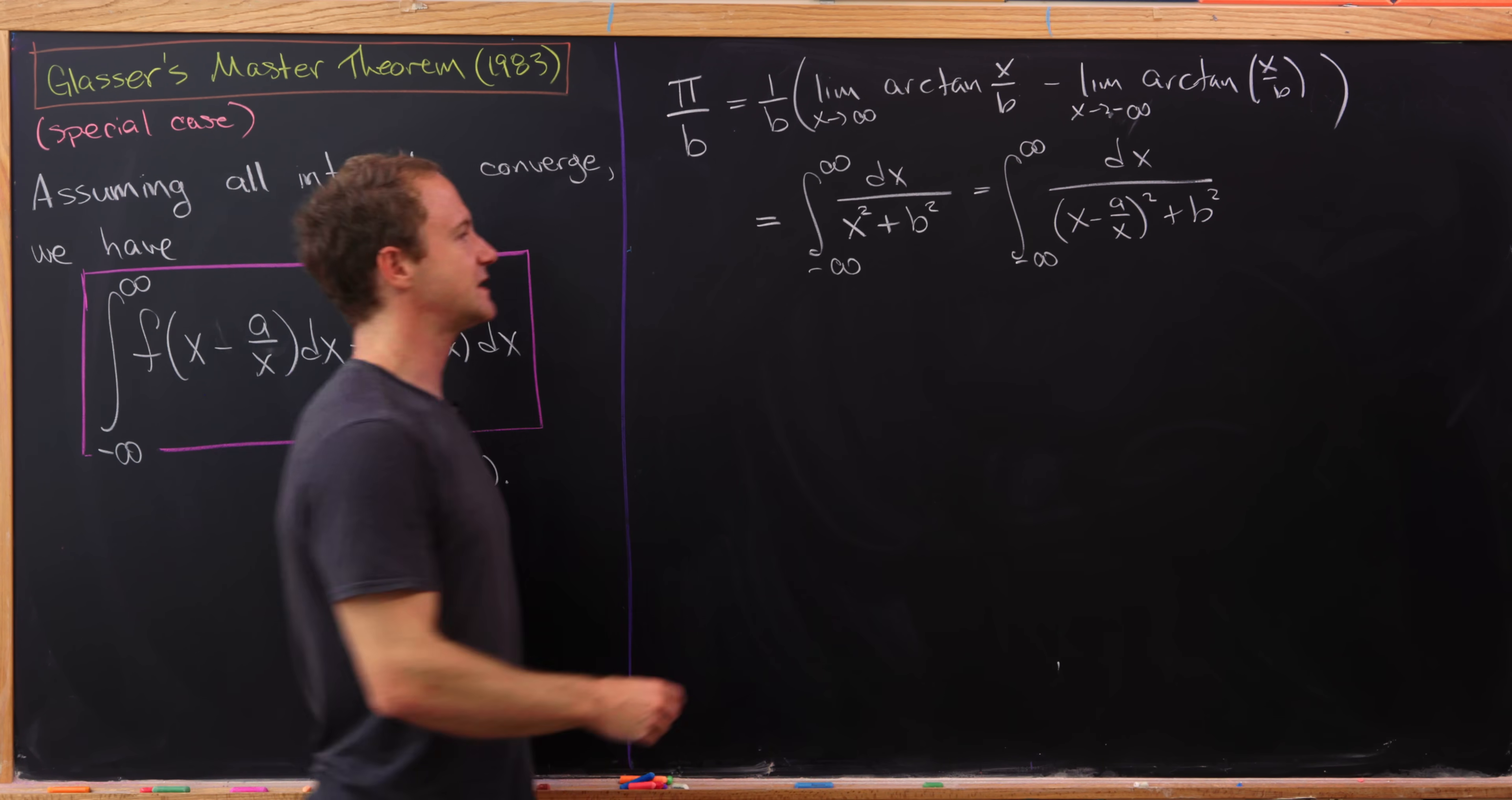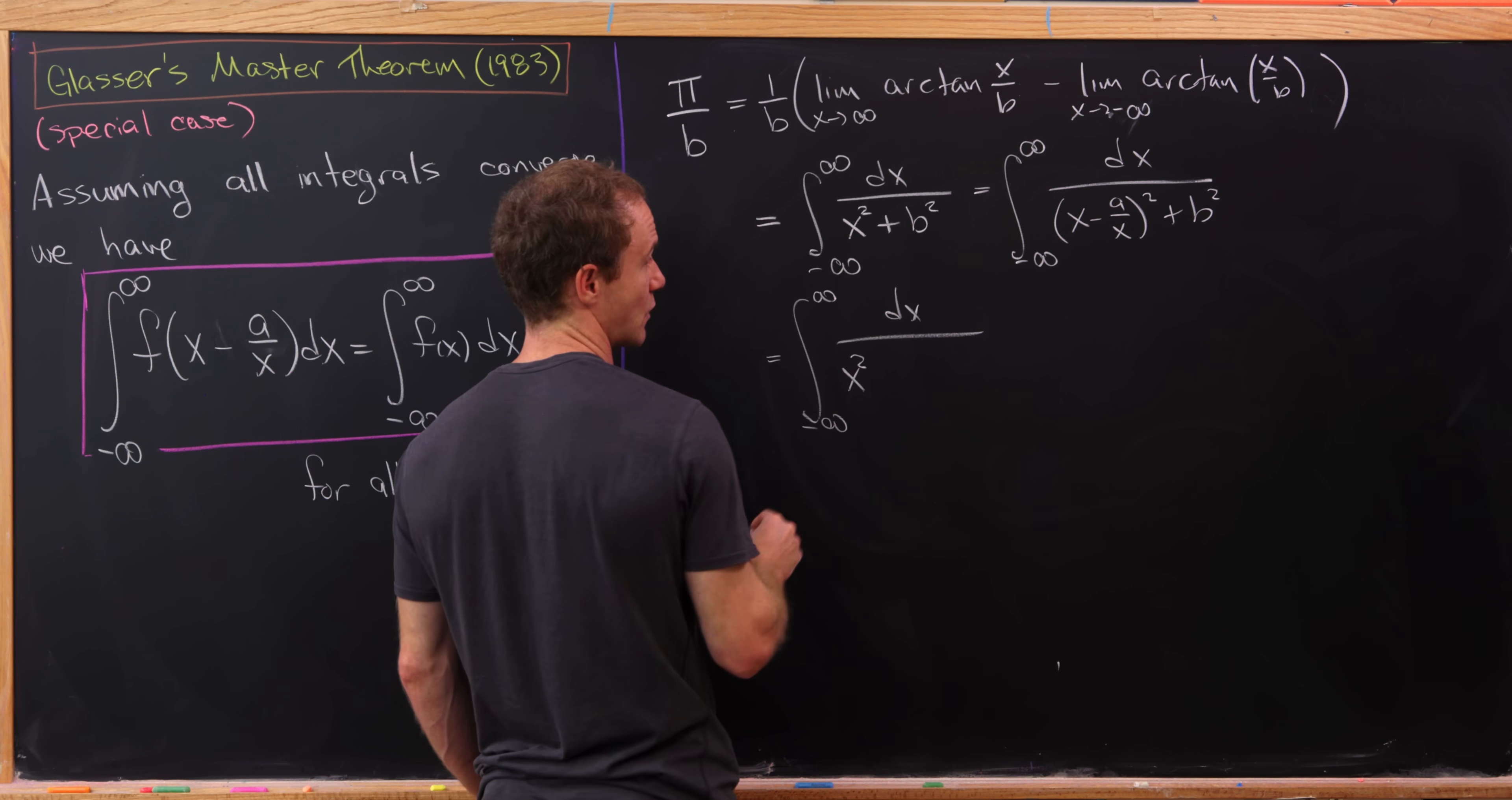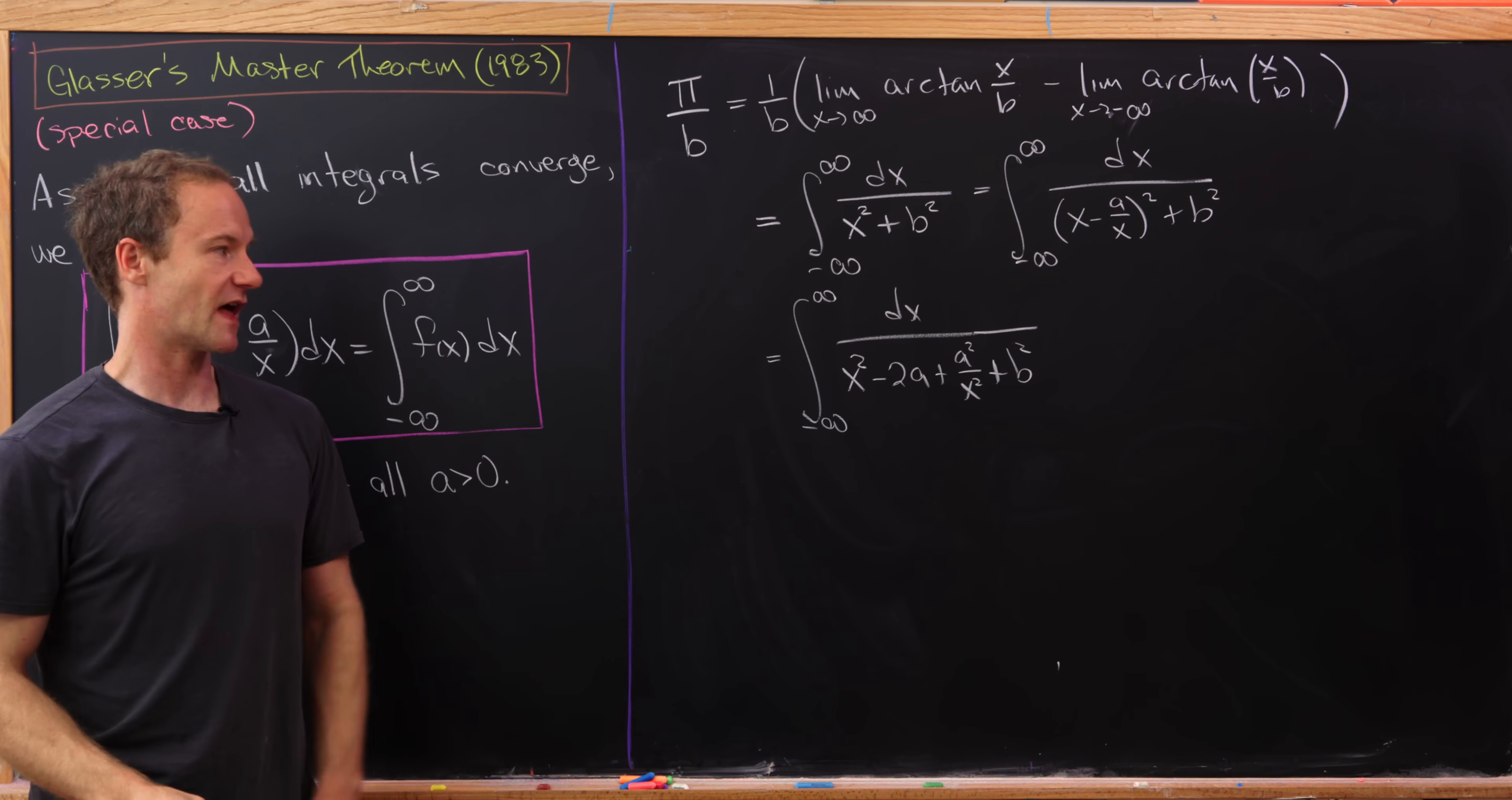So let's see what that gives us when we multiply everything out. Multiplying everything out in the denominator, we'll have something that looks like this: x squared, and then we'll have minus 2 times a, and then plus a squared over x squared plus b squared.